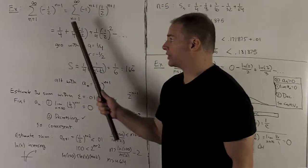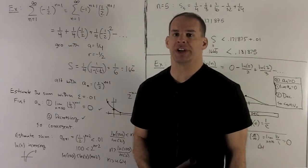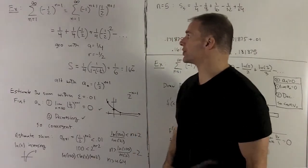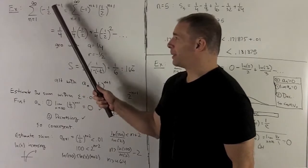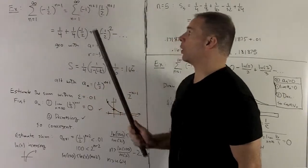Now let's try a series that's both a geometric series and an alternating series. So I'm going to go with sum from 1 to infinity, minus 1 half to the n plus 1.